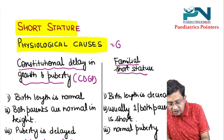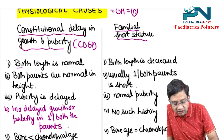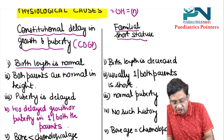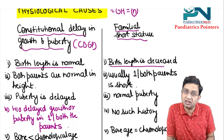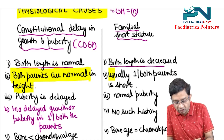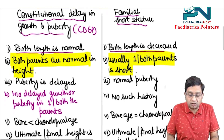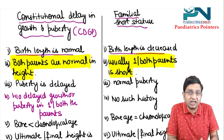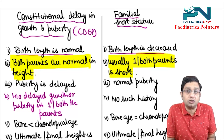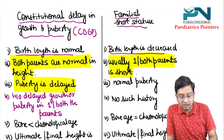The physiological causes mean that growth hormone levels are normal. In CDGP, the birth length is normal, but in Familial Short Stature, the birth length is decreased. Both parents are normal in height in CDGP, but usually one or both parents is short in Familial Short Stature. In CDGP, as the name indicates, there is not only delay in growth but also delayed puberty.